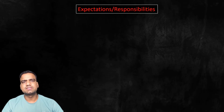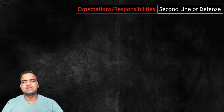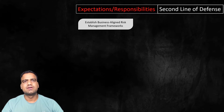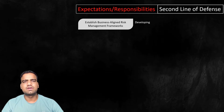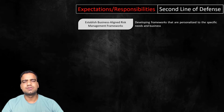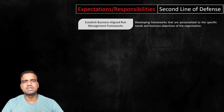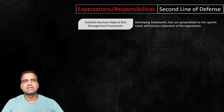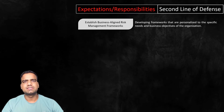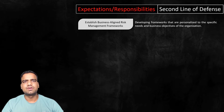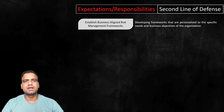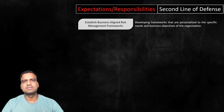What are the expectations from the second line of defense? The expectation is to establish a business-aligned risk management framework. The second line is responsible for developing risk management frameworks personalized to the specific needs and business objectives of the organization. This involves identifying key risks, assessing their potential impact, and establishing strategies to mitigate those risks. For example, a financial institution's risk management framework might focus on identifying and managing risks associated with credit, market fluctuations, and operational failures.